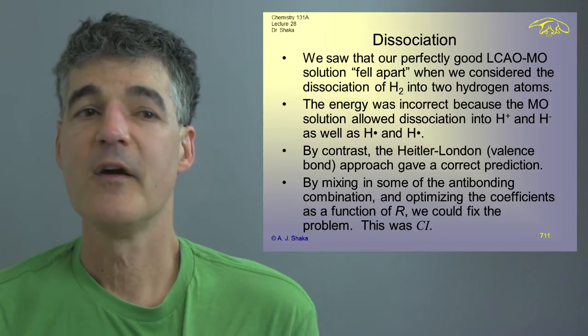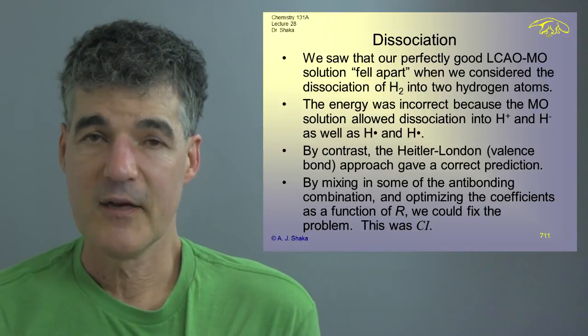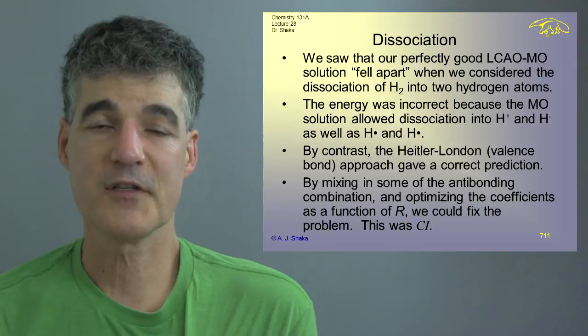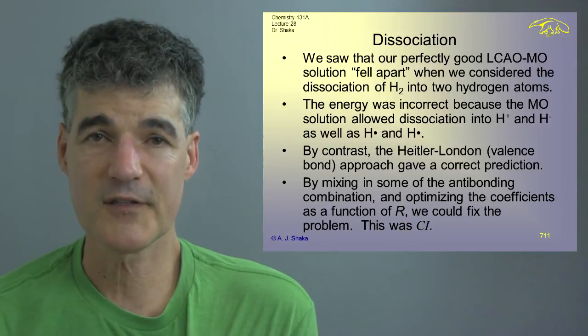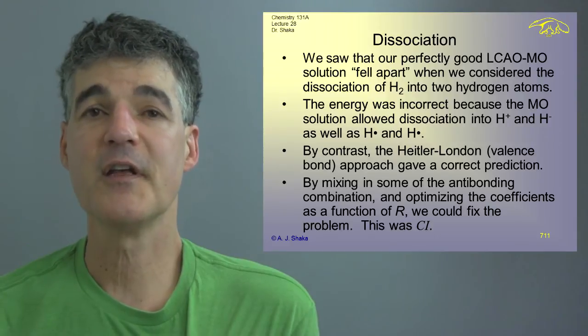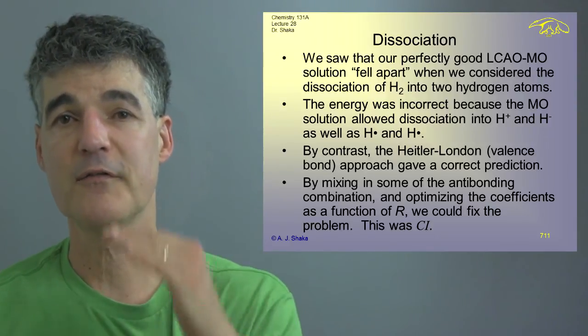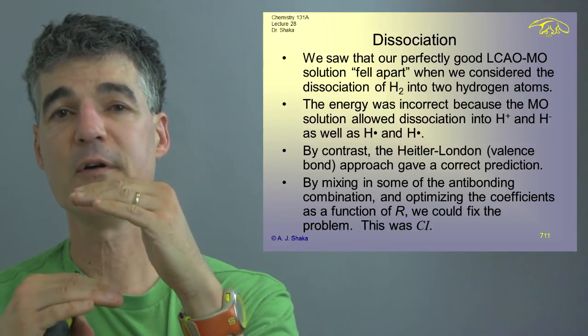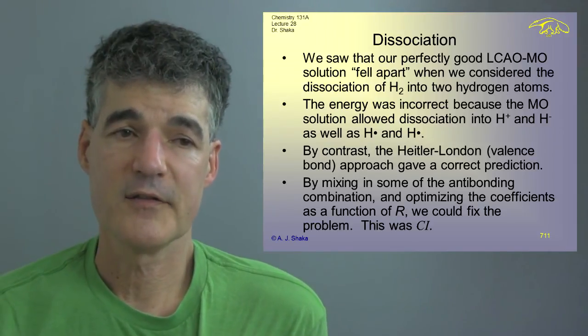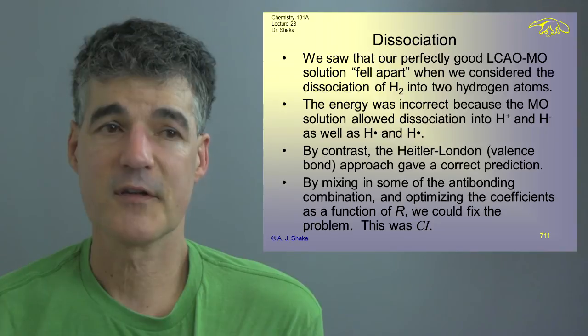And the convenient way we did that was to mix in a certain amount of the antibonding orbital as a function of R. And when we did that and optimized it, we got the correct prediction again. We got the right ionization energy, the right bond dissociation energy. And we called this configuration interaction. So we had two configurations, two orbitals, and then they were mixing and giving this interaction. And that gave us the correct result.